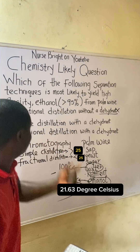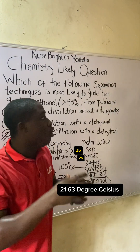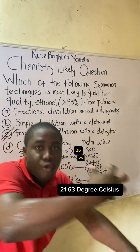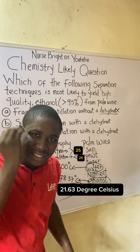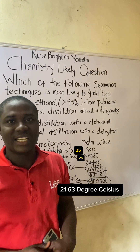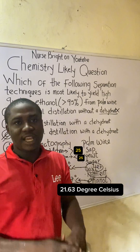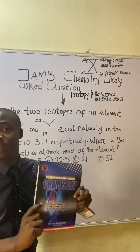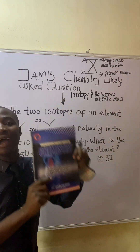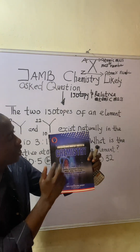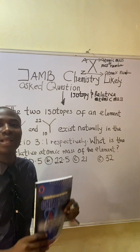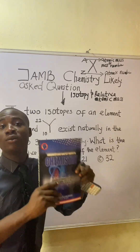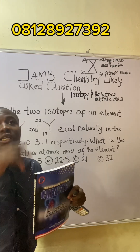Fractional distillation works more effectively than simple distillation, and for greater purity of ethanol to be formed, there must be a dehydrant to remove water from the palm wine. If you find this lesson helpful, subscribe to the channel and share with friends. For more chemistry calculations and exam preparation, check out the chemistry masterpiece book — contact me via WhatsApp for details.